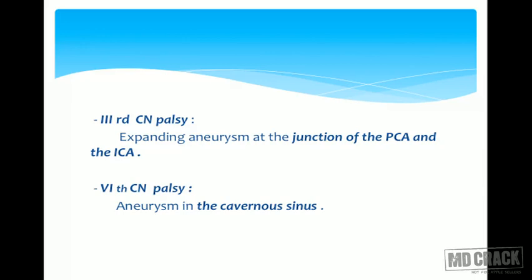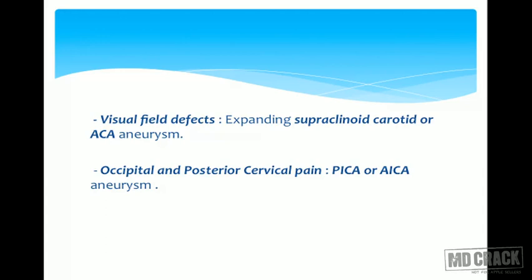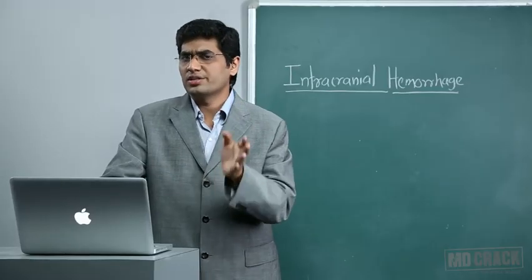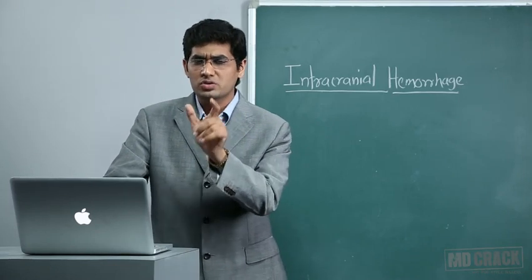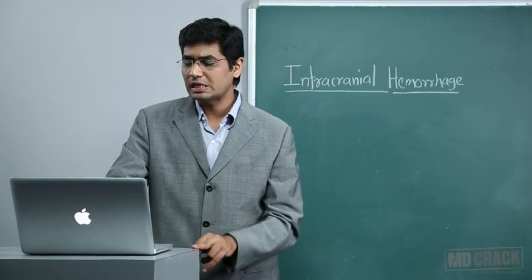Similarly, an aneurysm in the cavernous sinus is closely associated with the sixth nerve, so the patient may present with abducent palsy and lateral gaze palsy before subarachnoid hemorrhage. Some patients may present with visual field defects from expanding supraclinoid carotid and anterior cerebral artery aneurysms. Aneurysm of the posterior inferior cerebellar artery (PICA) or anterior inferior cerebellar artery (AICA) may present with occipital and posterior cervical pain requiring angiography to diagnose.